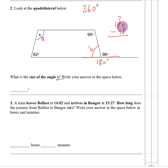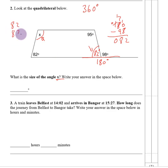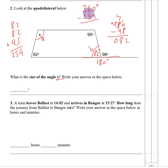So 180 minus 98: 0 from 8 we cannot do, borrow — 10 from 8 is 2; 7 from 9 we cannot do, borrow — 17 from 9 is 8; then 0. So this is 82 degrees. Now we have three angles and can add them together: 82 add 82 add 95. 5+2+2 is 9; 8+8 is 16, plus 9 gives 25. Taking that away from 360 leaves us with the missing angle x. 0 from 9 we cannot do, borrow — 10 from 9 is 1; 5 from 5 is 0; 3 from 2 is 1. So the missing angle is 101 degrees.